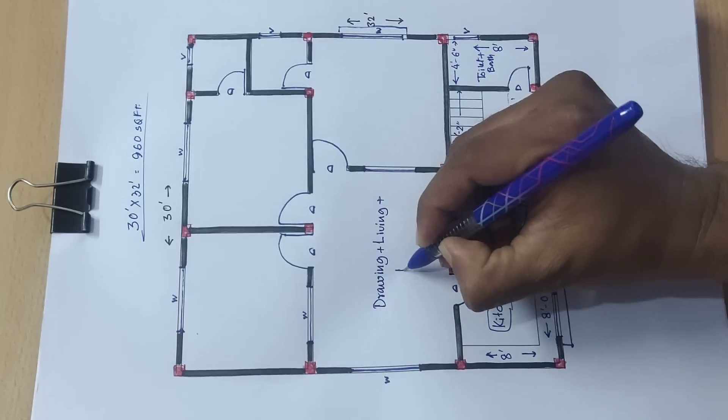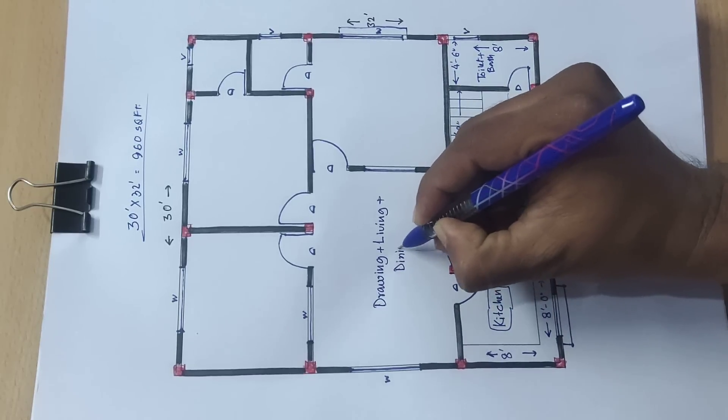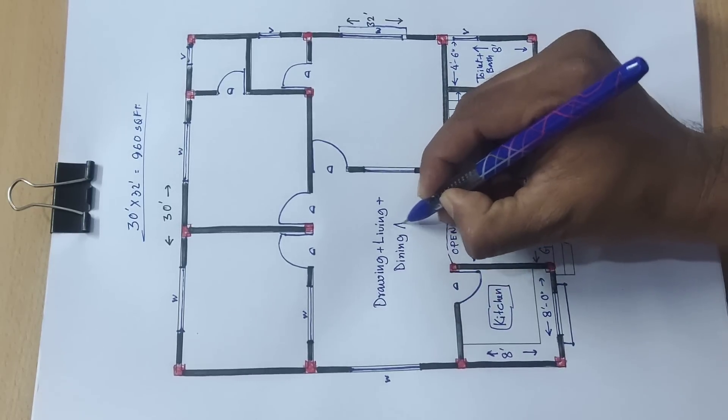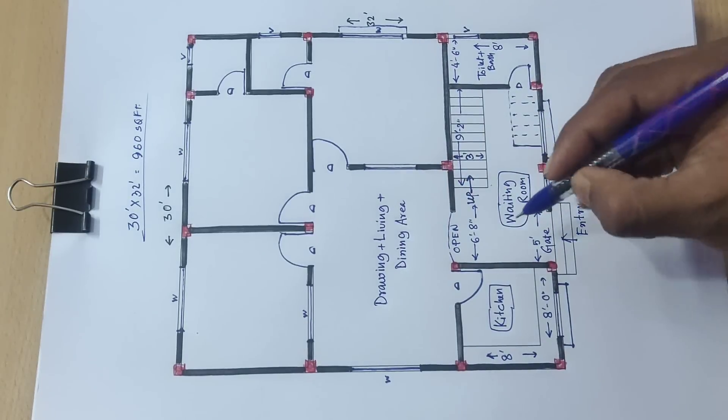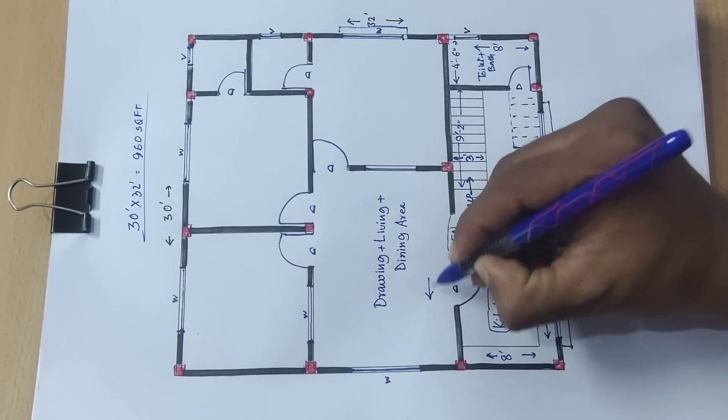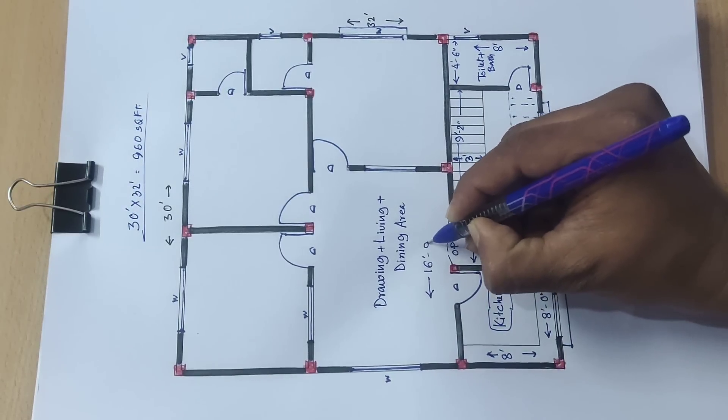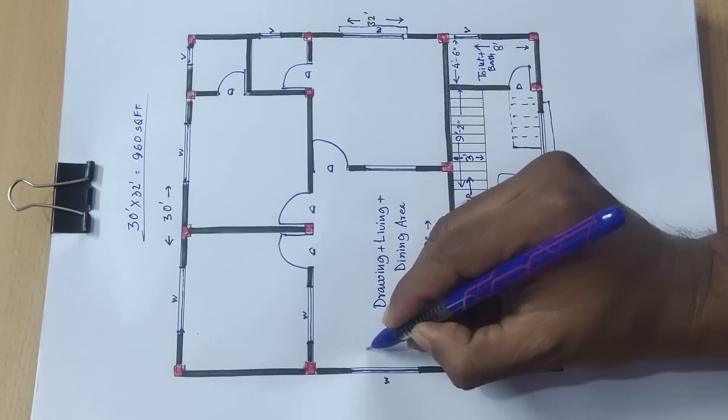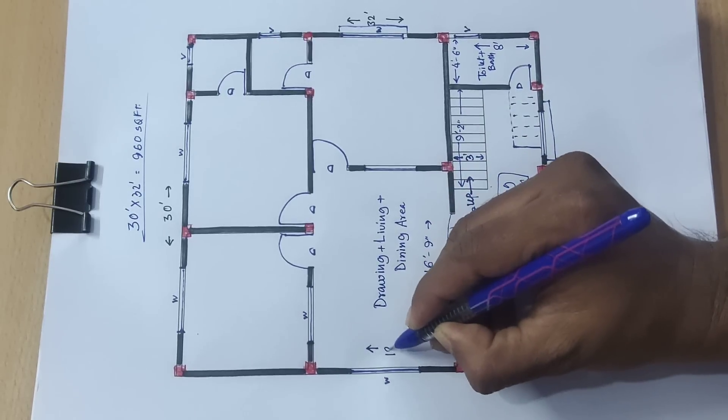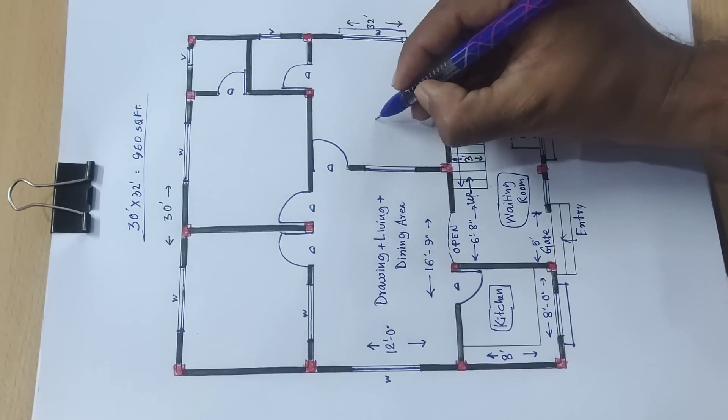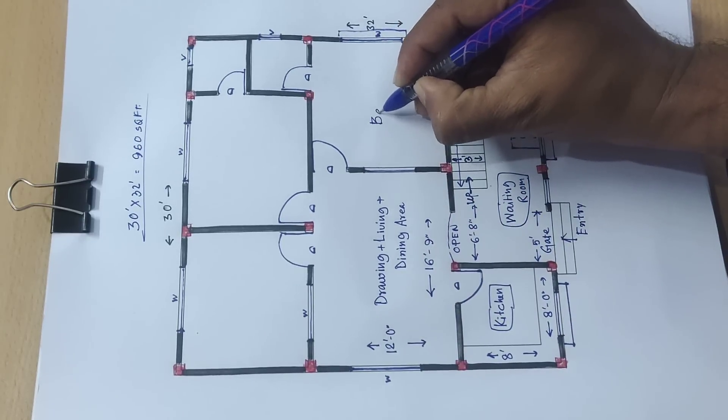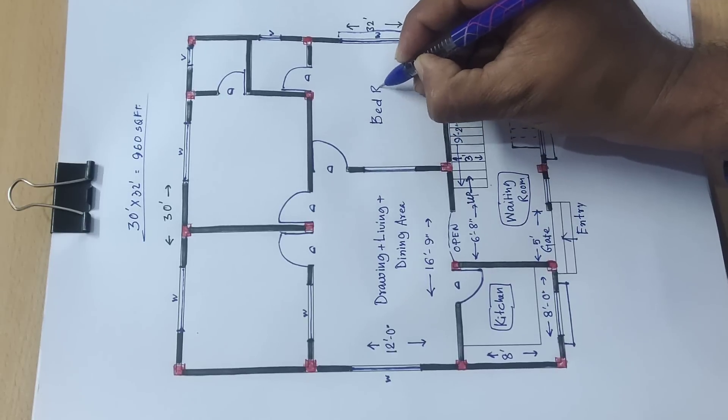Next, drawing plus living plus dining area. Total distance 16 feet 9 inch and this side distance 12 feet. This is bedroom.